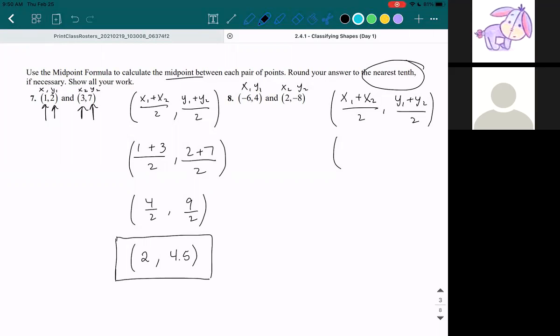Okay, so your x1 is negative 6. Your x2 is 2. y1 is 4. y2 is negative 8. Okay, simplify. So negative 6 plus 2, that's negative 4.